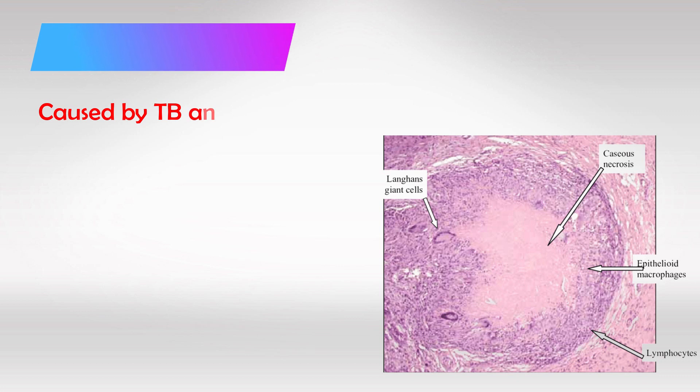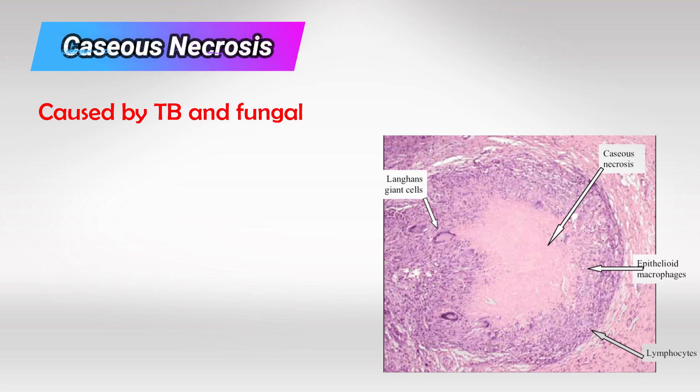The next type is caseous necrosis, which is of course notorious for TB infections and some fungal infections. In this type, the body will isolate the infecting organism, such as TB cells, and put them all in one place, then surround the entire infective organism with a big sphere made of macrophages.